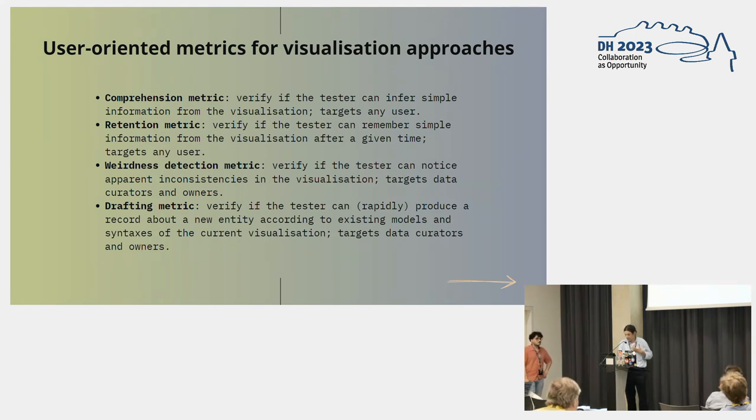There are few evaluation models for capturing the actual impact of uncertainty in information visualization. So how do we evaluate the effectiveness of uncertainty visualization? We propose sample evaluation methods based on four different parameters considering users' needs and motivation to measure the effectiveness of visualization approaches. Comprehension parameter that verifies if the user can infer information from the visualization. Retention parameter that verifies if the user can remember information from the visualization after a given time. Apparent inconsistencies parameter that verifies if the user can notice apparent inconsistencies in the visualization. And finally, the drafting parameter that verifies if the user can produce a record about a new entity according to existing models and syntaxes of the current visualization.